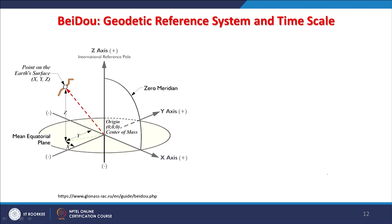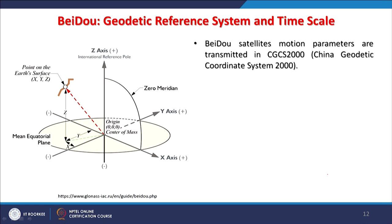Each navigation system uses its own geodetic reference system: GPS uses ECEF, GLONASS uses a different one, and BeiDou uses its own. Earth is not a perfect sphere, so each country tries to have the best reference system for its own location. BeiDou's motion parameters are transmitted in CGCS2000 — the China Geodetic Coordinate System of 2000.